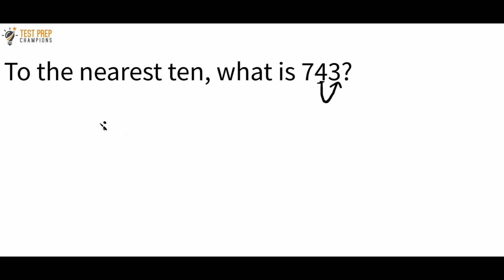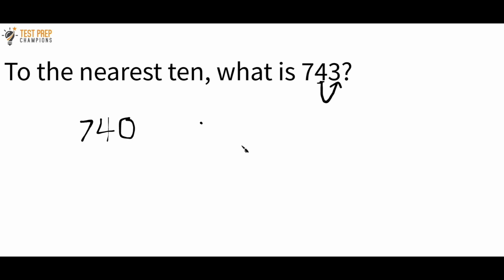You might be wondering what rounding down means. I'm going to leave everything to the left of the 4 exactly as it is — leave 7 alone and leave 4 alone — but I'm going to turn the number to the right of 4 into a 0. So I turn that 3 into a 0. The answer here is 740.